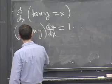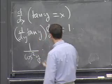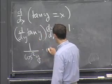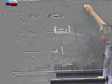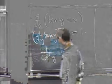Or, if you like, 1 over cosine squared y times, in the other notation, y prime is equal to 1. So I've just used the formula that I just wrote down there.